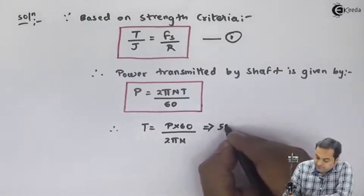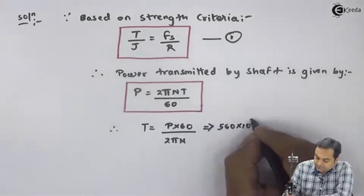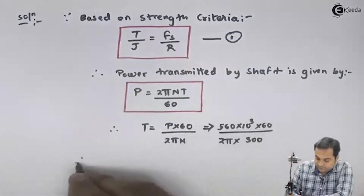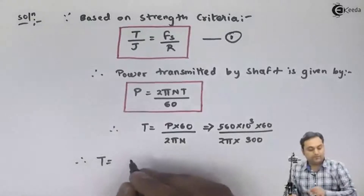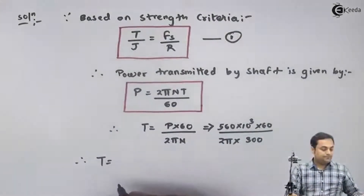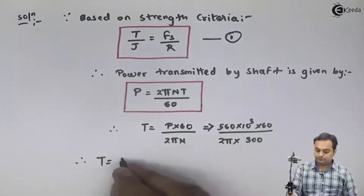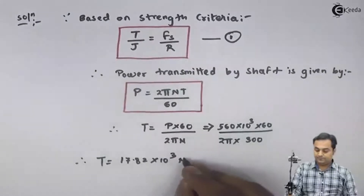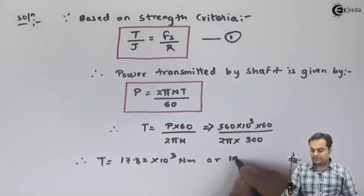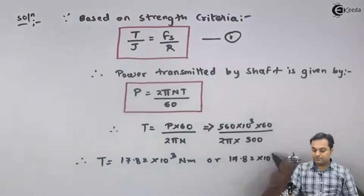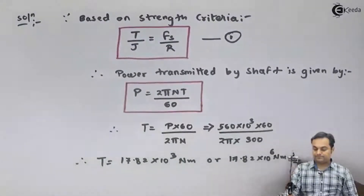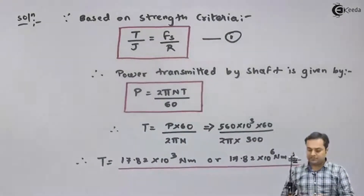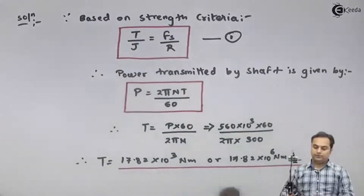Power is 560 × 10³ watts and N is 300 RPM. Substituting these values, I get the torque value as 17.82 × 10³ N·m, which is equal to 17.82 × 10⁶ N·mm. This is the torque transmitted by the shaft. Now I will put all values into equation number one.